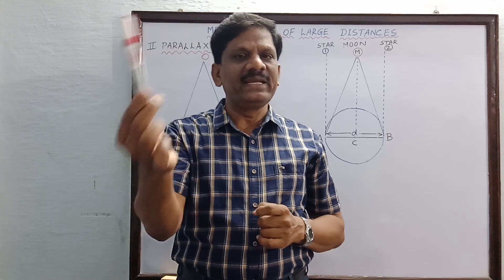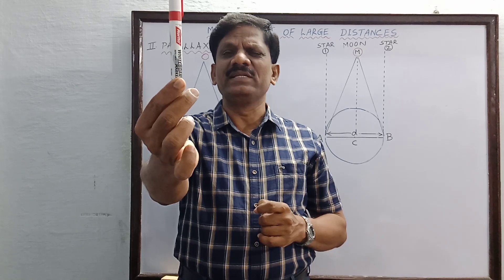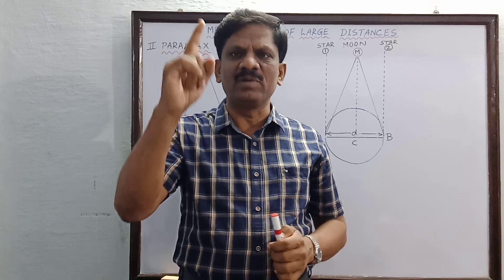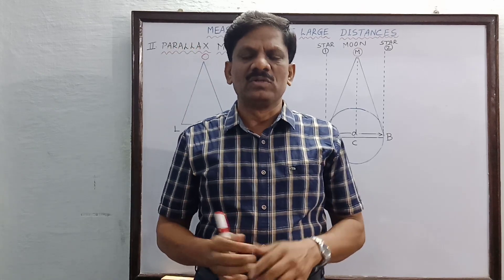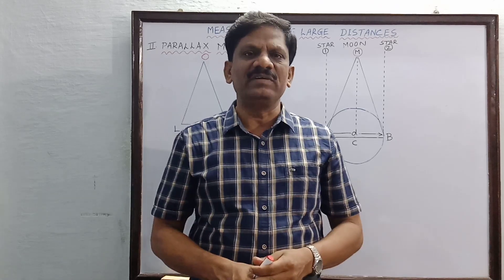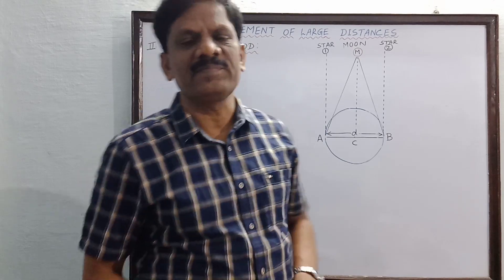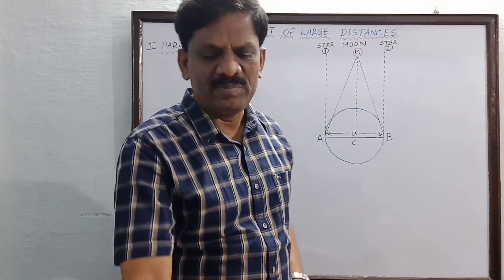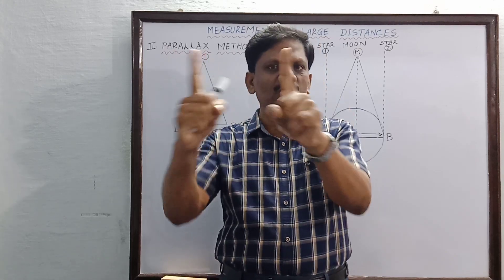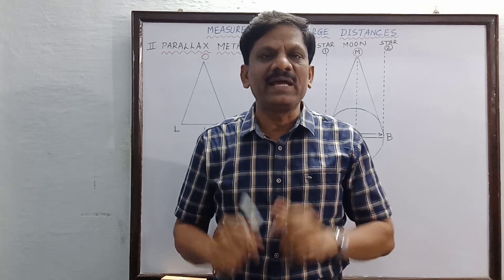Alternately, if you close the left eye and the right eye and simultaneously observe the position of the pen, you can see the change in the positions found on the wall. The distance between the two positions of the pen found on the wall is called the basis. The angle subtended at the eye by the two positions of the pen is called the parallactic angle or parallax angle.